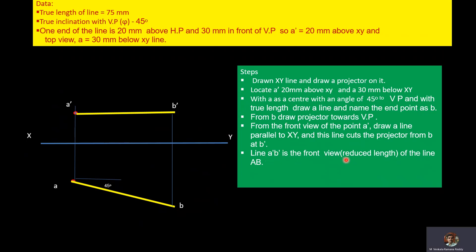Line A'B' is the front view, that is the reduced length of the line. And AB is the true length of the line. Now we will do the dimensioning for this true length and position of point A'.